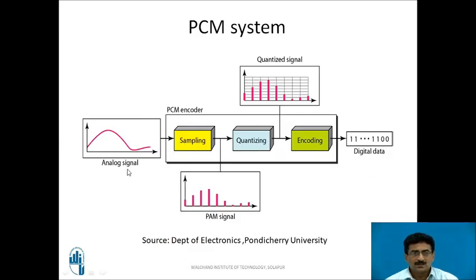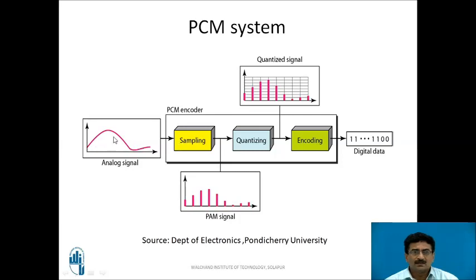The PCM system consists of three basic blocks: the sampler, the quantizer, and the encoder. The function of the sampler is to take samples of the input signal, and it must satisfy the basic sampling theorem.